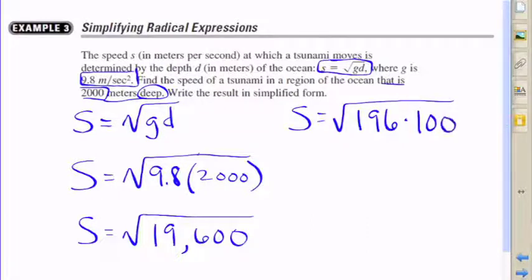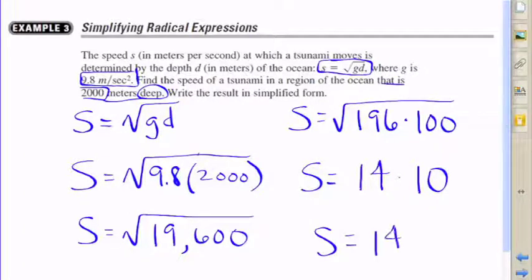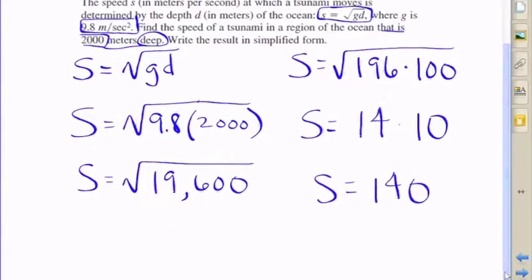Well, use the product of powers property and find two numbers that multiply where one of them is a perfect square. Of course, in this case, we actually end up with two perfect squares because 196 is 14 squared and 100 is 10 squared.